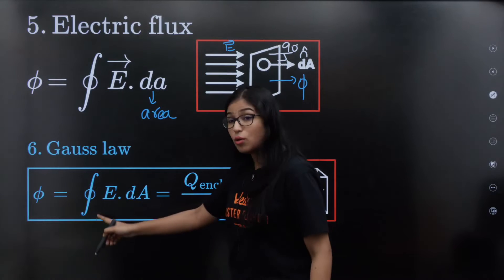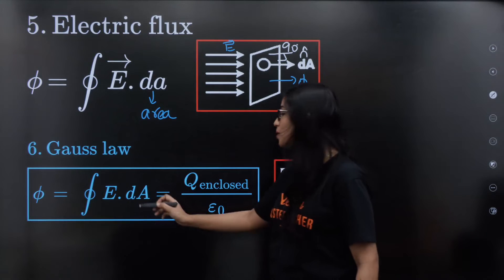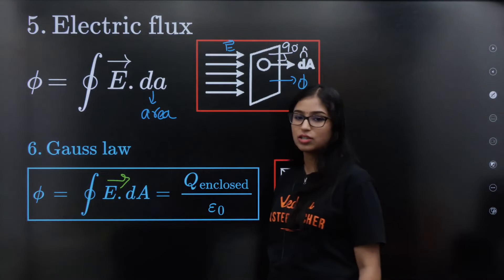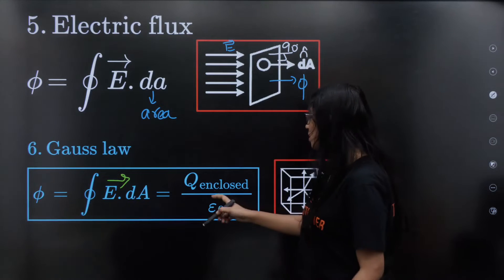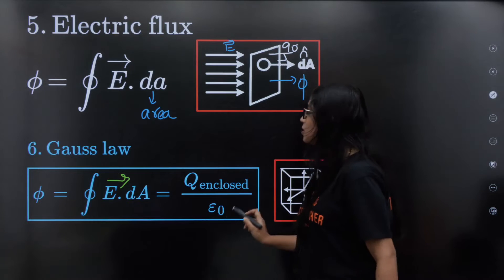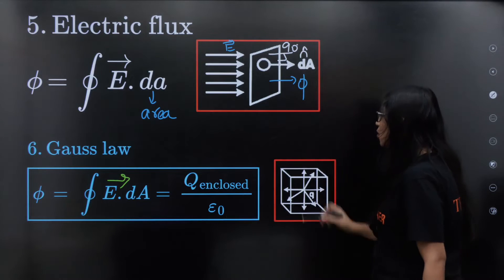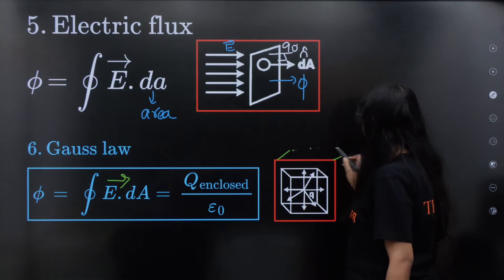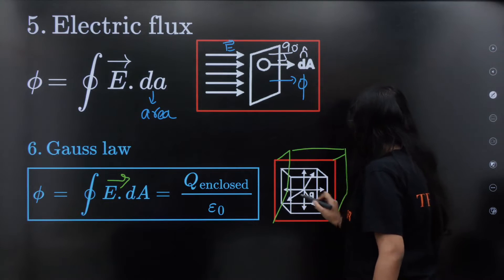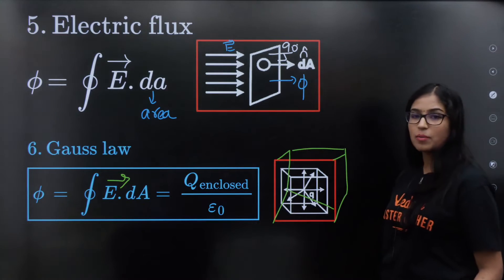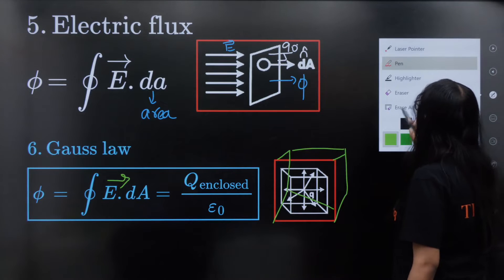By Gauss's Law: the closed integral of E·dA equals q enclosed divided by epsilon naught. This means we draw a Gaussian surface and find the total enclosed charge.